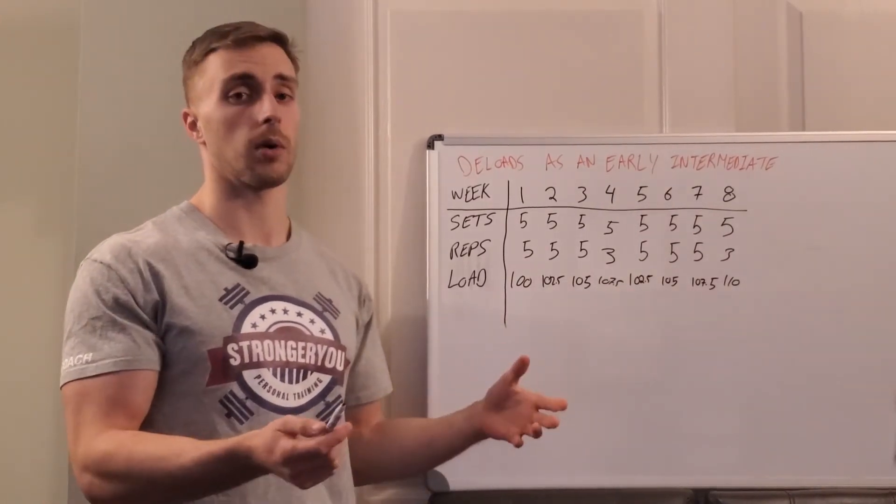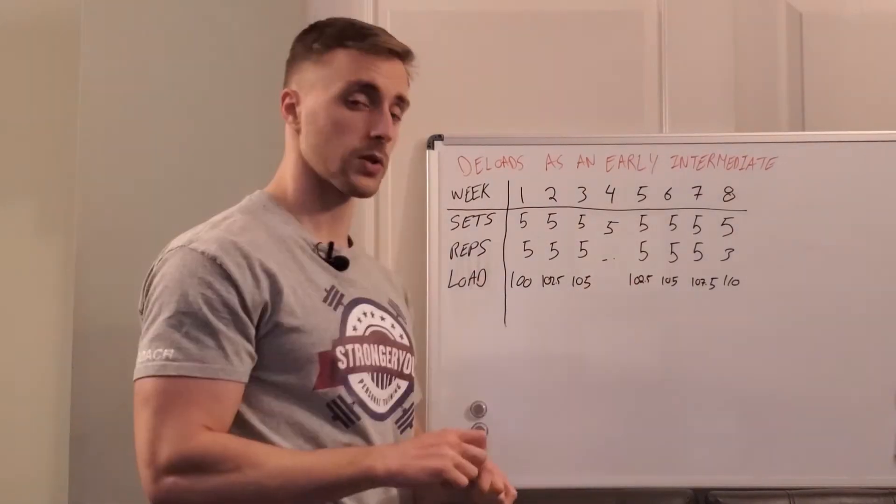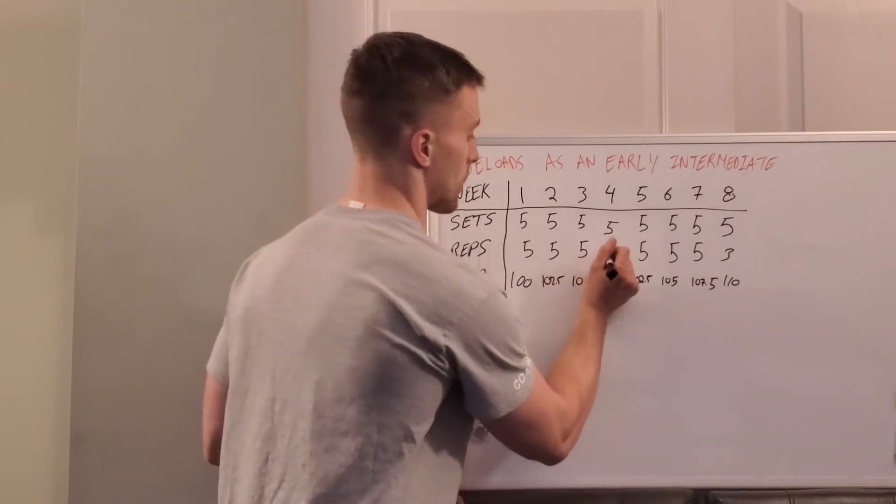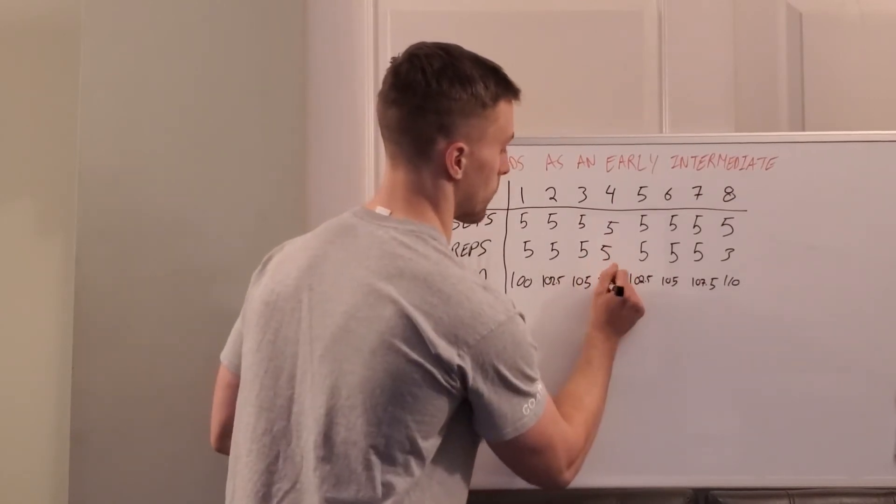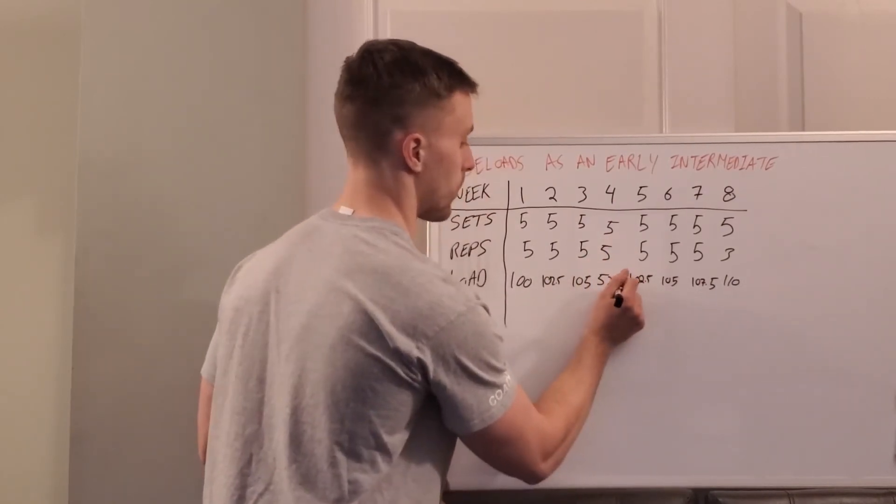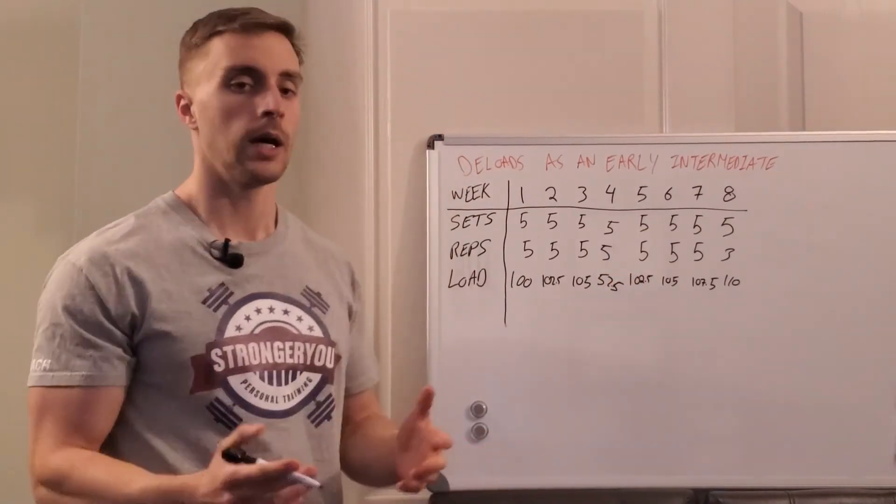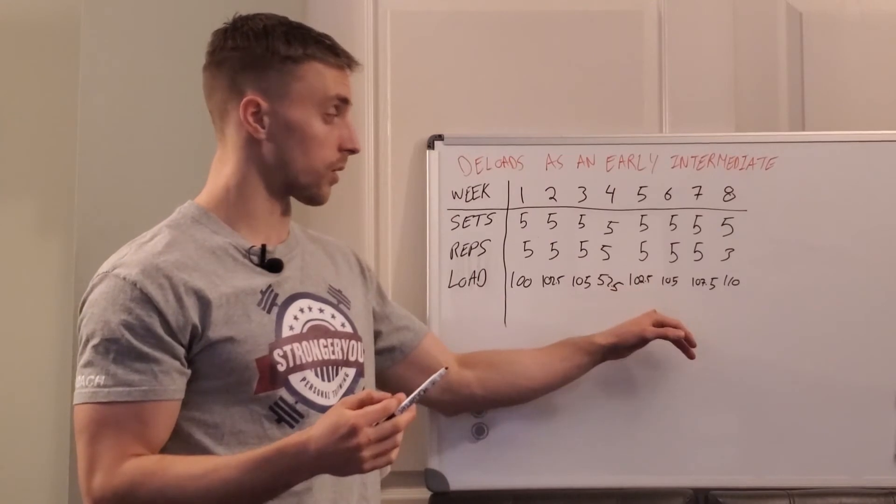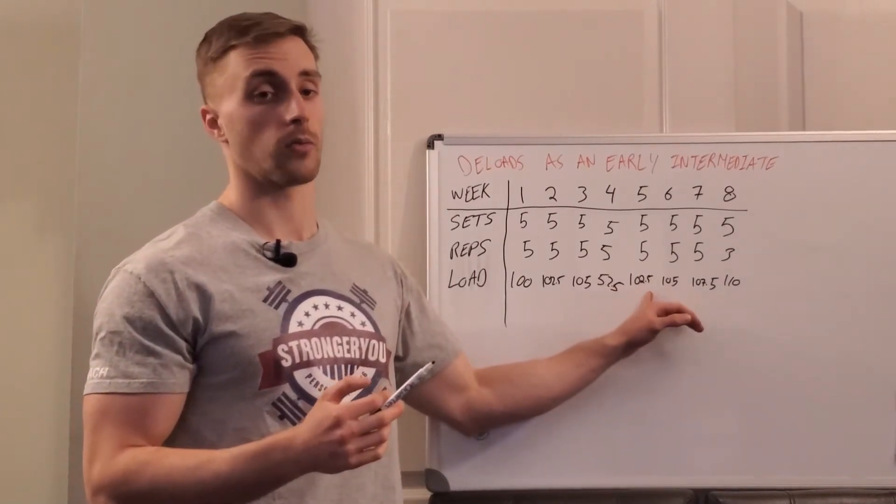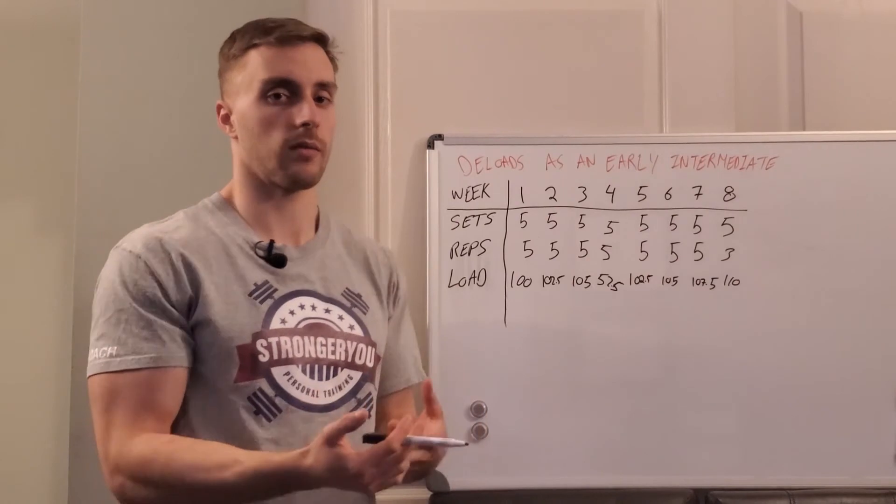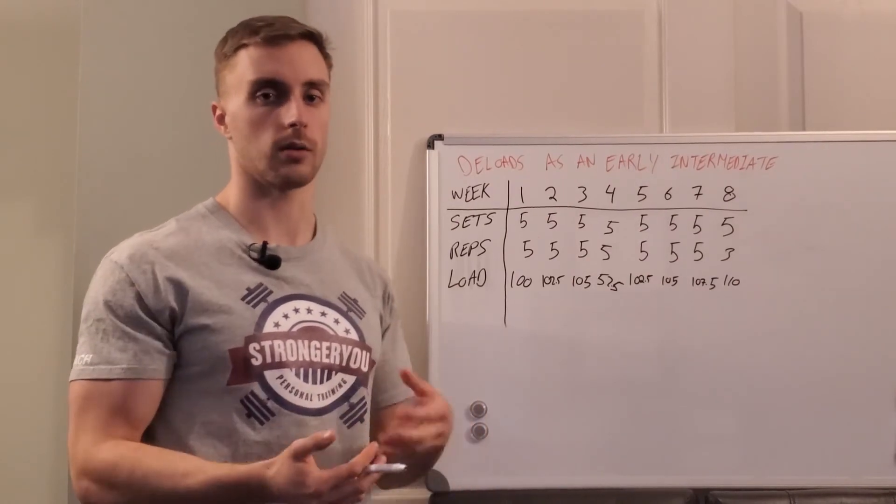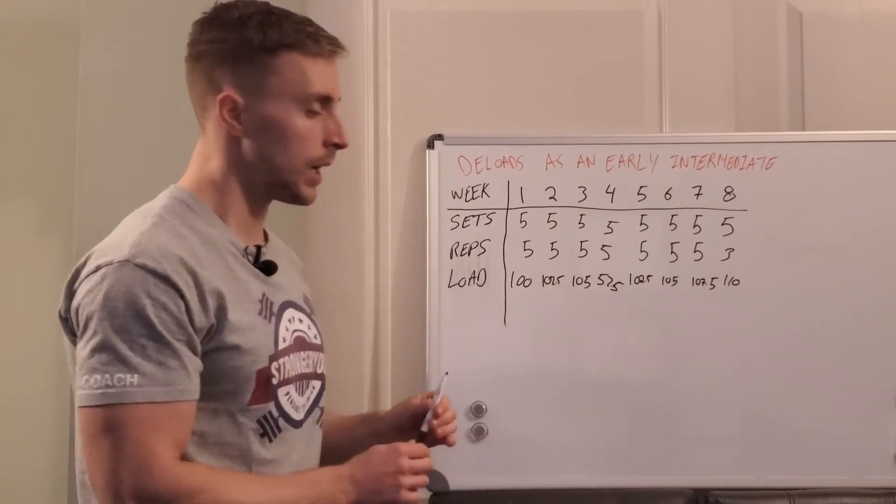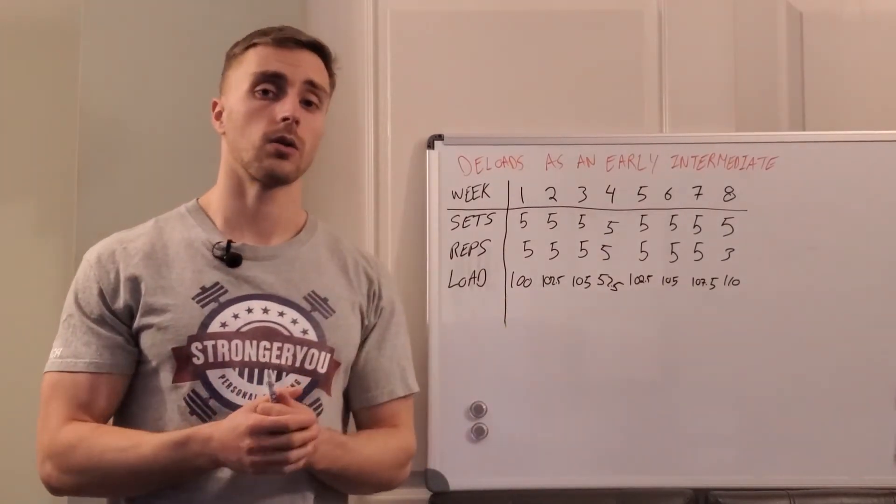So let's say we did a week at 50% and then we would just end up with a five by five at 52.5 kilos instead. That's probably fine but they're going to come into their week one of the program and 102.5 is probably going to feel pretty heavy. They don't have enough time with that level of strength to really hold on to it and not need constant exposures to it.